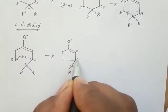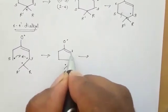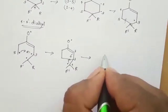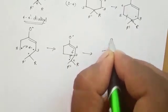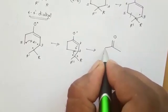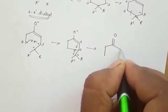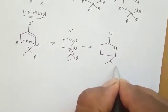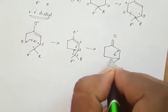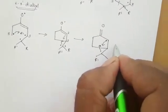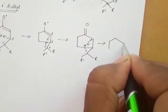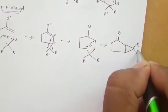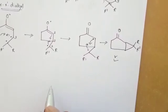Now we have to make the 2-4 bond. To do this, we break the 2-1 bond, generating radicals at positions 2 and 3, with R and R' remaining. These radicals then combine, and the final rearranged product contains R and R' groups in the new arrangement. This is the final product of the lumiketone rearrangement.